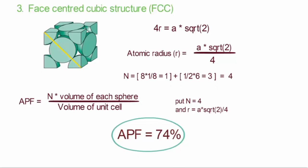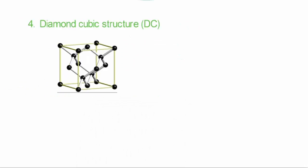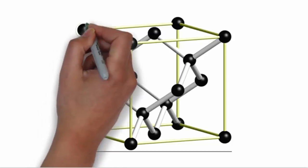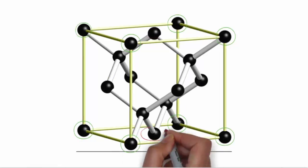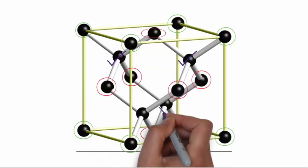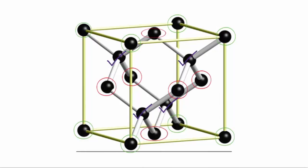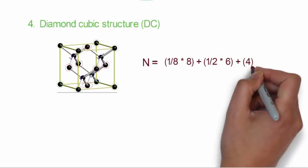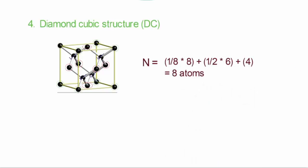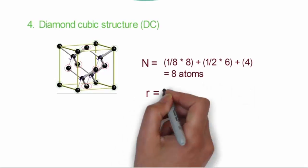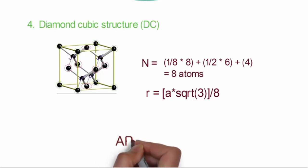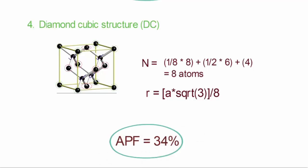In the diamond cubic structure, formed by 2 interpenetrating FCC arrangements, there are 18 atoms in a unit cell: 8 at corners, 6 at faces and 4 atoms inside. The effective number of atoms n = 1/8 × 8 + 1/2 × 6 + 4 = 8 atoms. The atomic radius R = A√3/8. The atomic packing factor works out to 34%, which is the lowest packing efficiency among all 4 cubic systems.